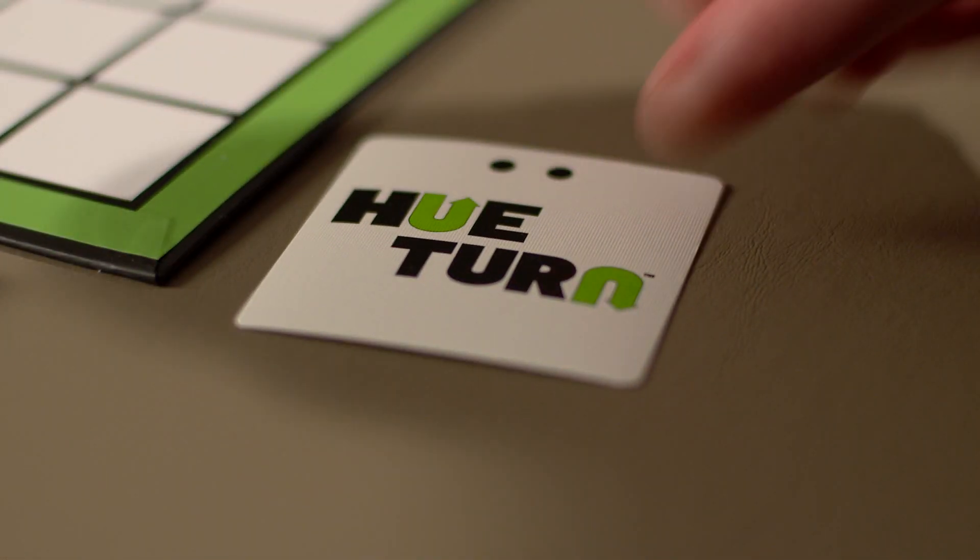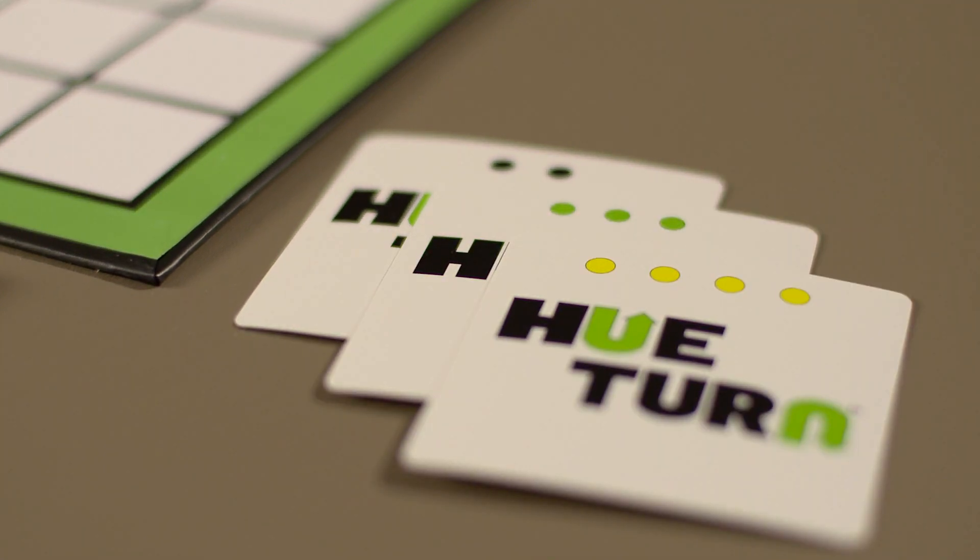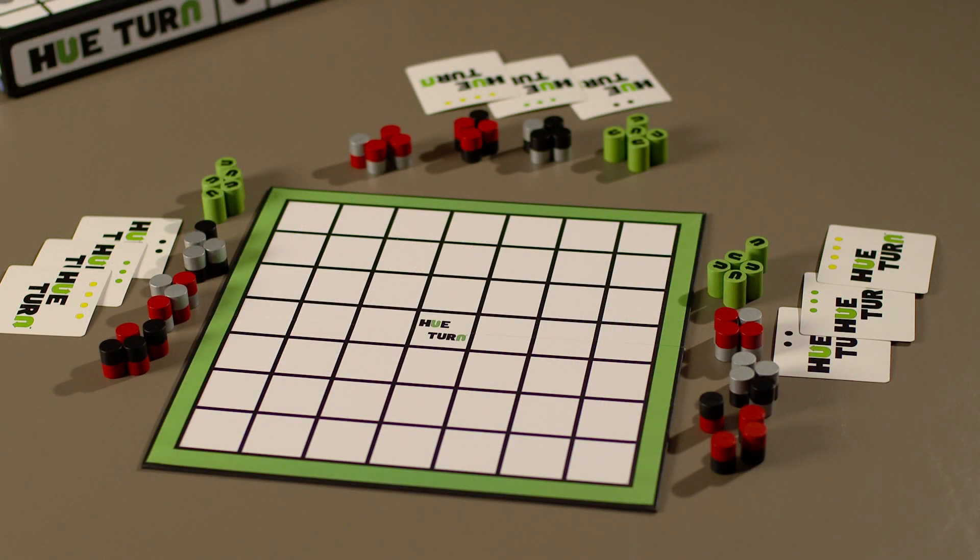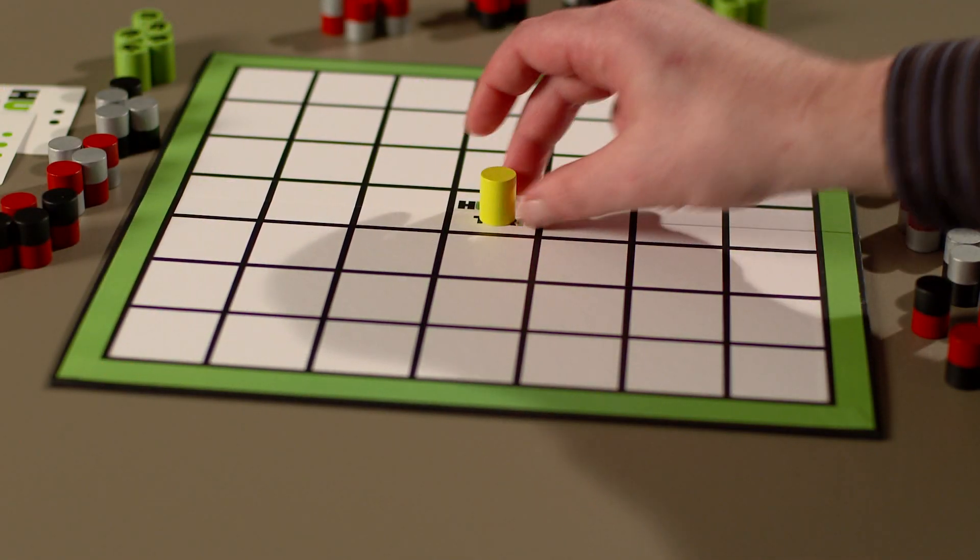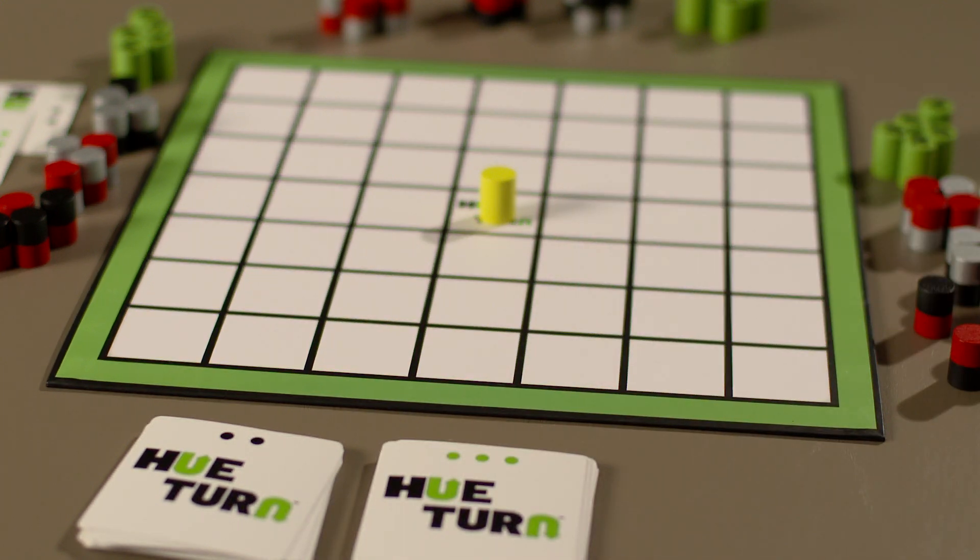Here's how to play. Shuffle all three decks of pattern cards, then give a card from each deck to each player. Divide all the double-sided pegs and green Hu-Turn pegs equally among all players. Place the yellow wild starter peg in the center of the board and the draw decks nearby. The youngest player goes first.